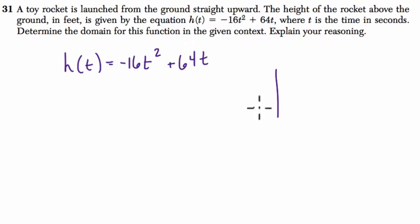So basically, let's explain our reasoning. We've got a rocket, it's launching, and it's going to hit the ground somewhere. So it starts at the ground, that's one root, and then it lands at the ground here at the other root.